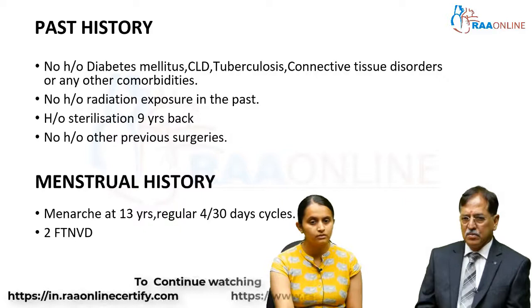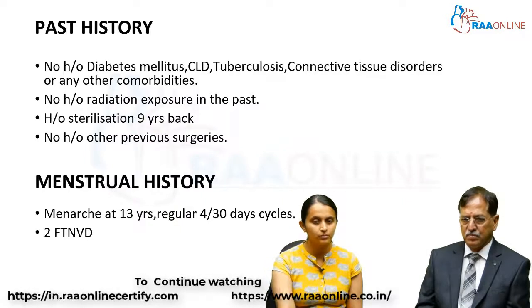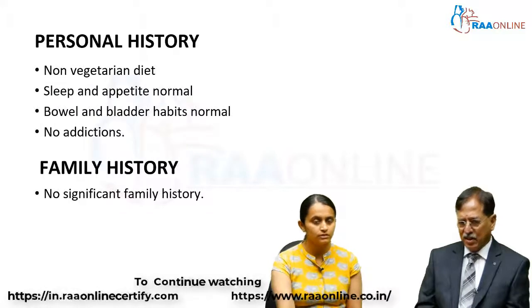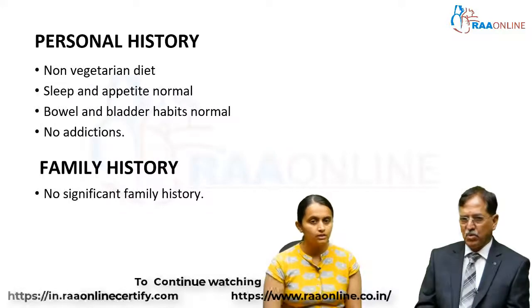Menstrual history: menarche at 13 years, regular 4 by 30-day cycle, normal flow. In a short case, this is not particularly relevant, so you need not elaborate on it.